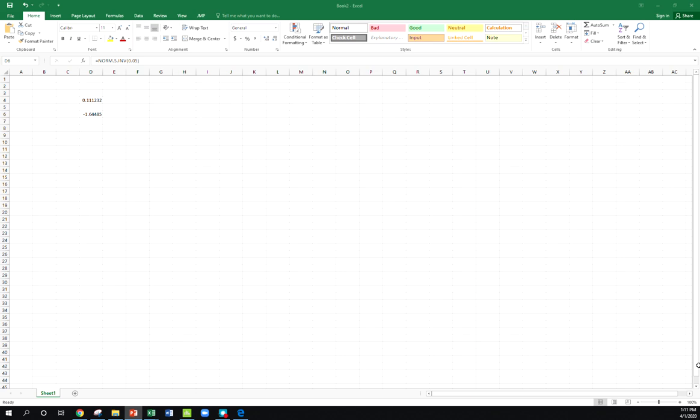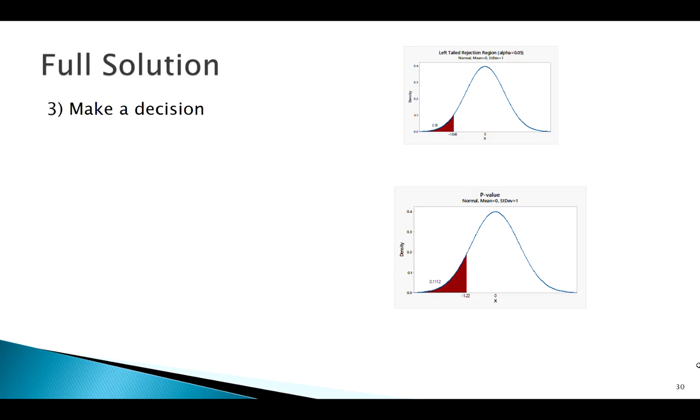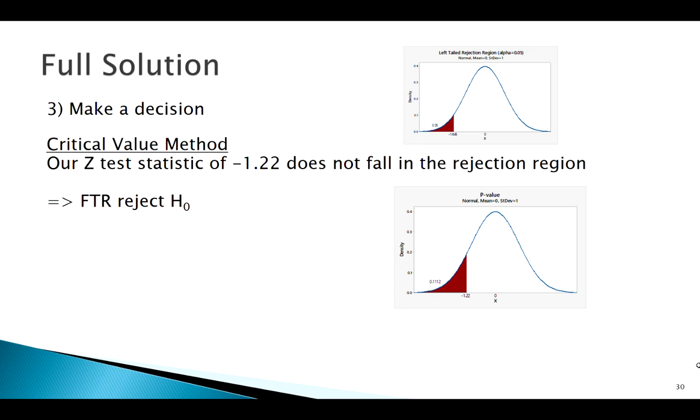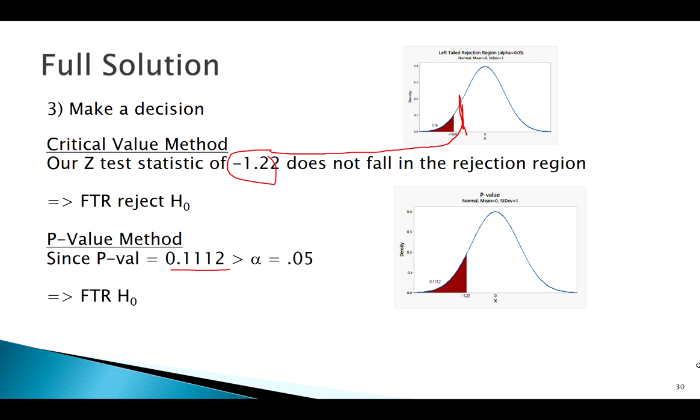We've got our critical value, test statistic, p-value, all this stuff. The critical value method tells me that negative 1.22 falls over here somewhere. It's not in our rejection region. We also see, based on our p-value method, that is greater than alpha. So both of these methods tell us to fail to reject.